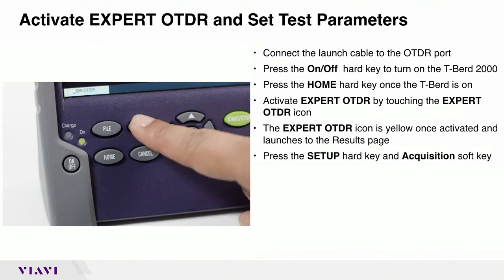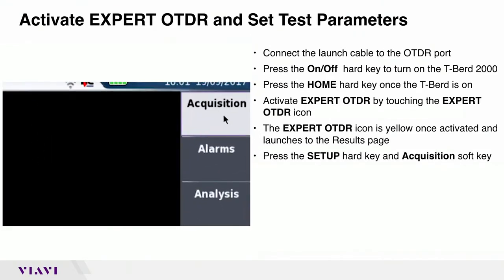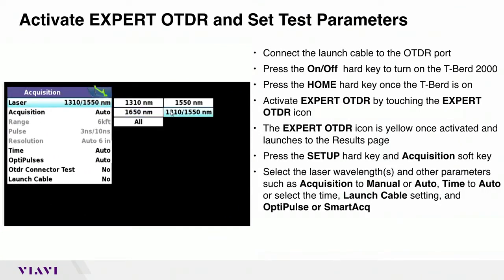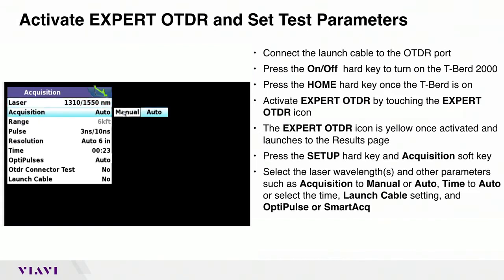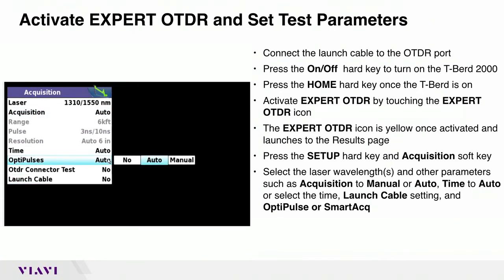Press the SETUP hard key and ACQUISITION soft key. Select the laser wavelengths and other parameters such as ACQUISITION set to MANUAL or AUTO, TIME set to AUTO, or select the LAUNCH CABLE settings and OPTIPULS or SMART AXE settings.